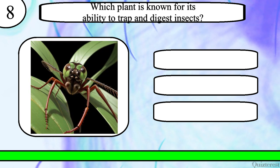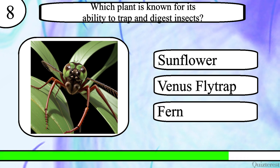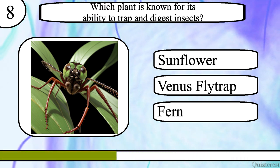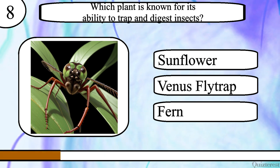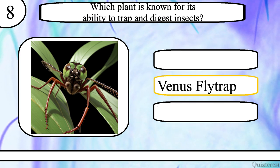Question 8. Which plant is known for its ability to trap and digest insects? Sunflower, venus flytrap or fern? The correct answer is venus flytrap.